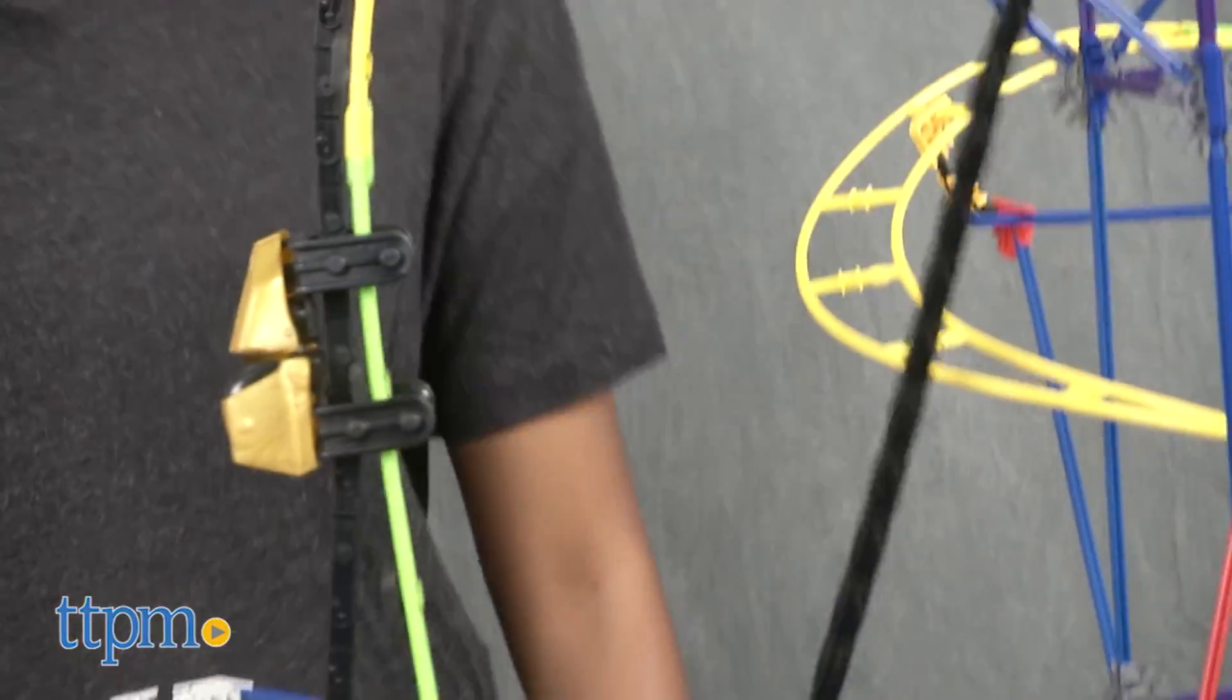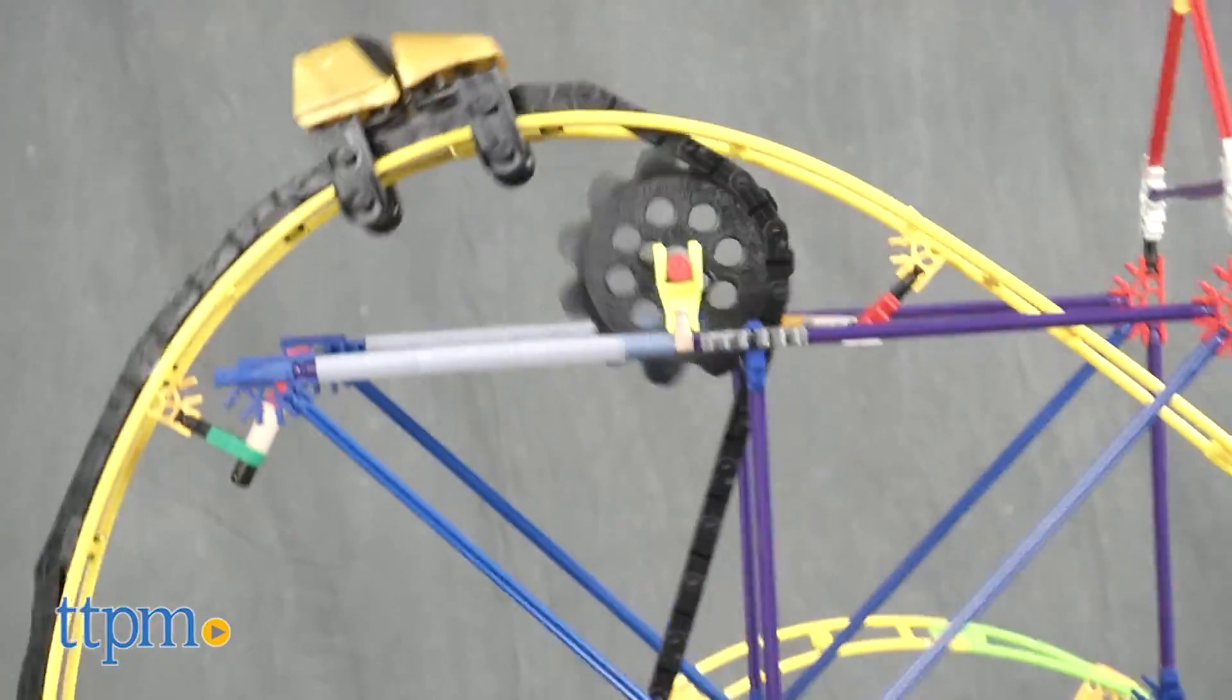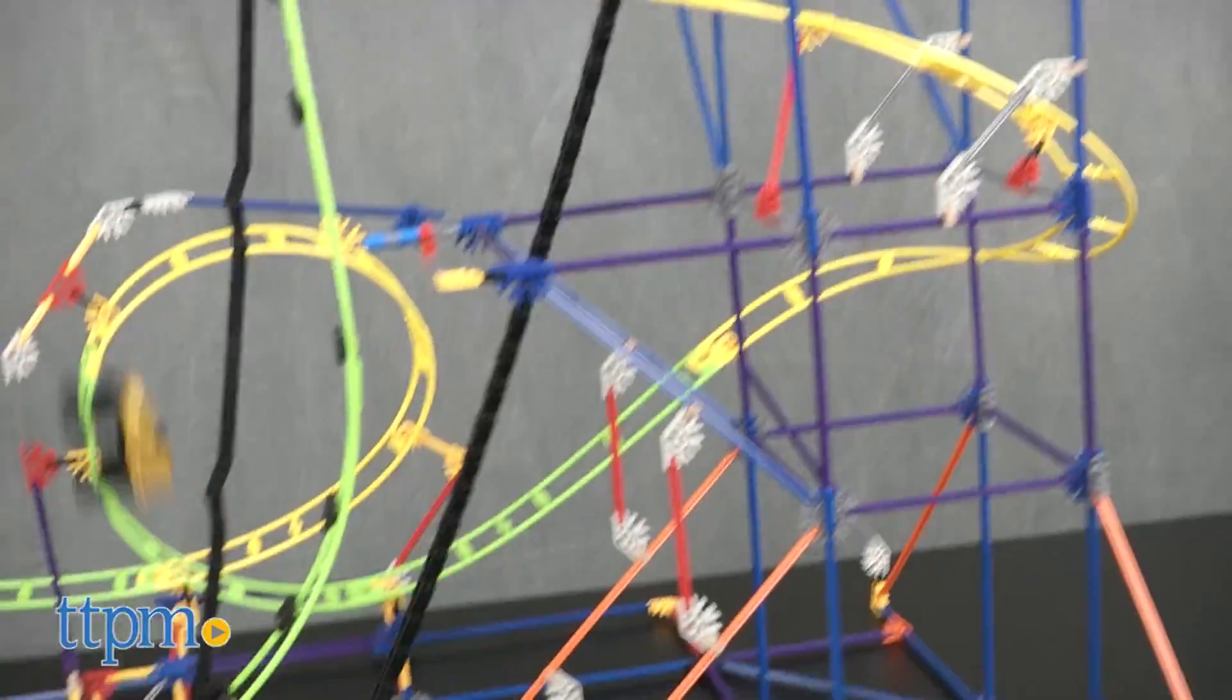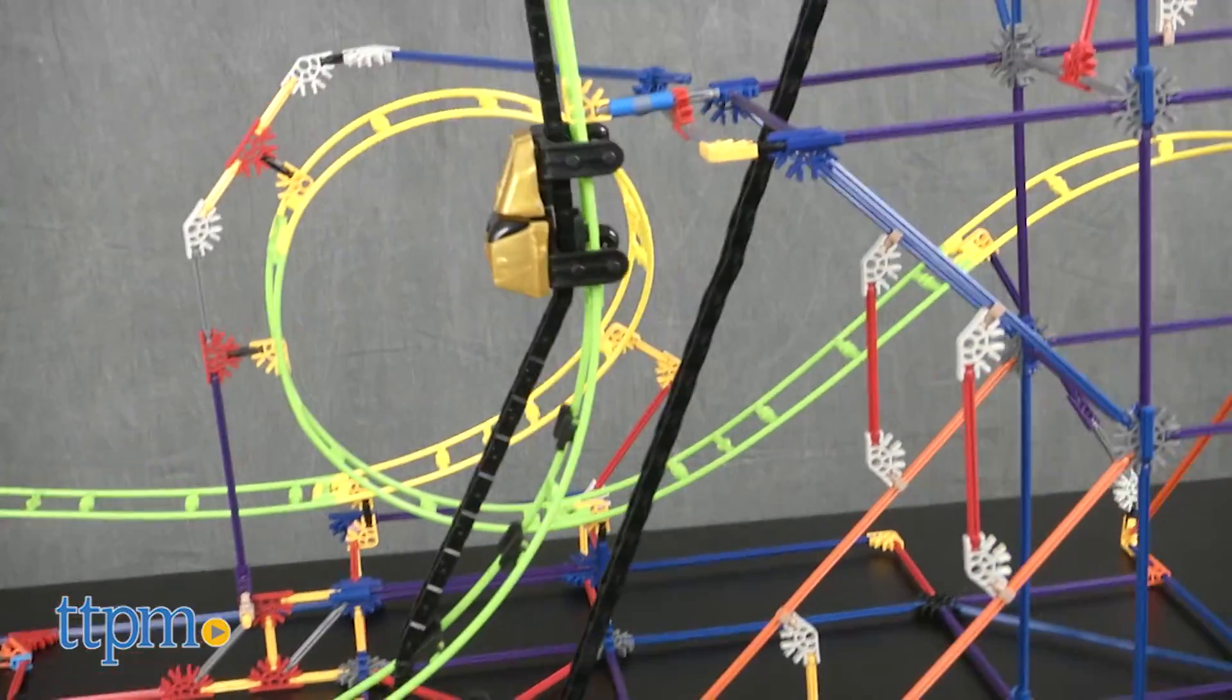The roller coaster took us about two hours to build but may take longer. Instructions are included only for the roller coaster. This requires two AA batteries for the motor which are not included.